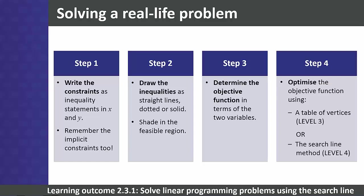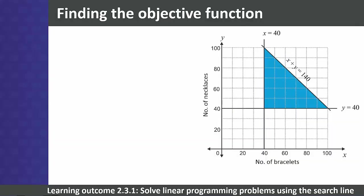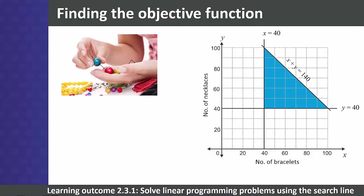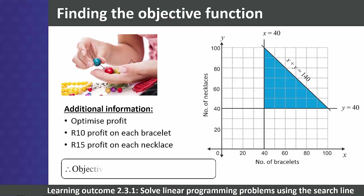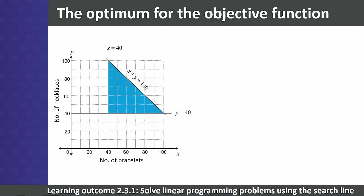Let's look back at our beadwork situation. We have drawn our constraints and found the feasible region. We need to optimize the amount of profit made — there is 10 rand profit on each bracelet and 15 rand profit on each necklace. This gives us the objective function: profit equals 15y plus 10x.